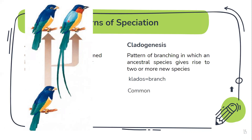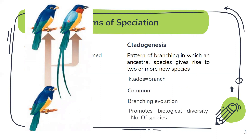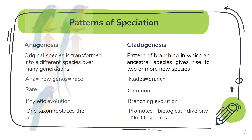It is very common to observe cladogenesis. The best known example is adaptive radiation — Darwin's finches, which branched into 14 different types of finches. It is called branching evolution, and it increases diversity because the number of species increases after this process.